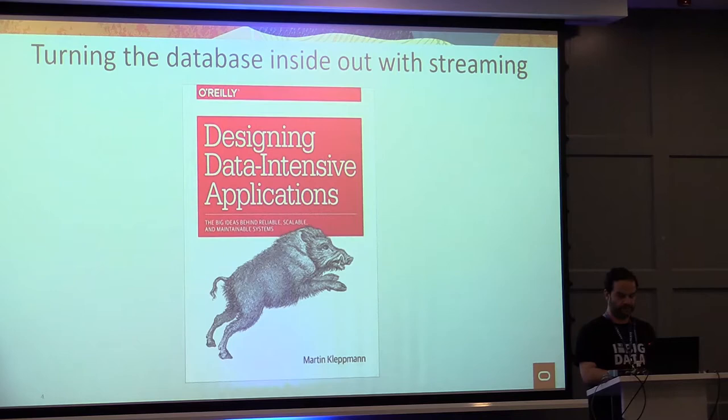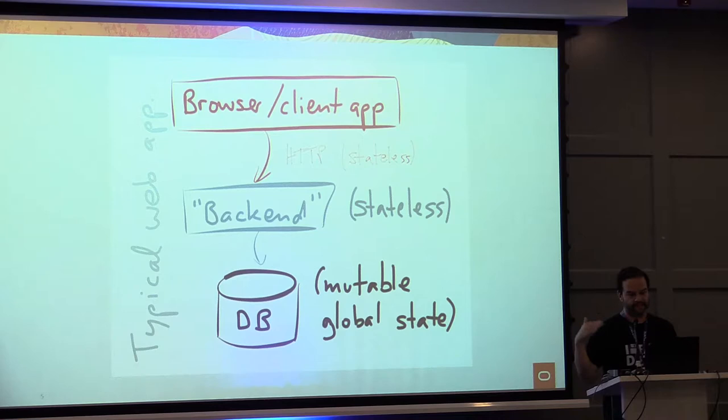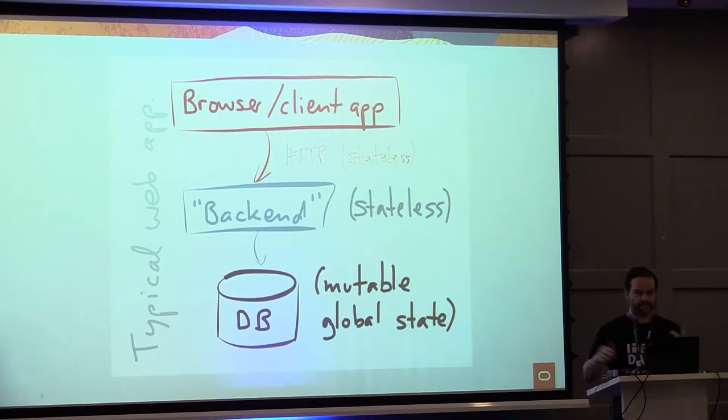If you think about a normal web application nowadays, you can divide it into layers: you have the front end with a browser, you have the back end, and then the back end connects with the database. The idea is that the back end is stateless, so different users can use different tables, or you can have different systems using your system.